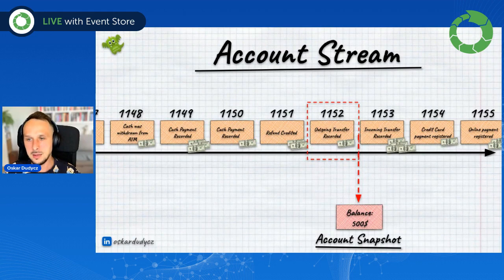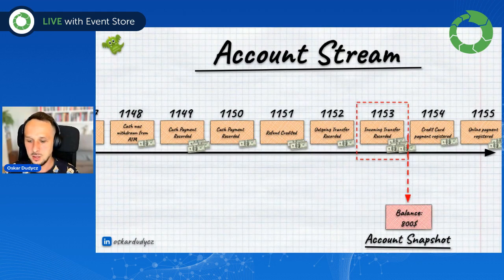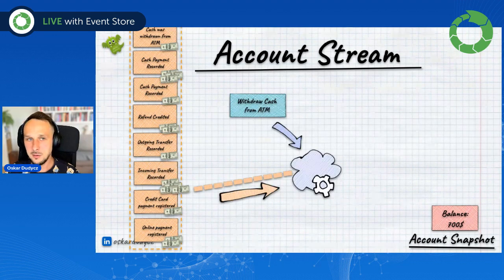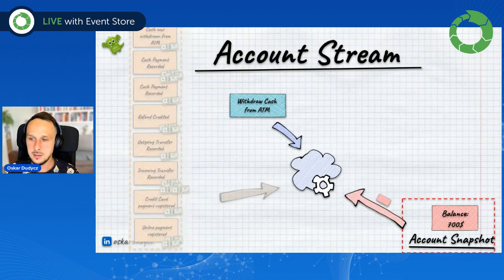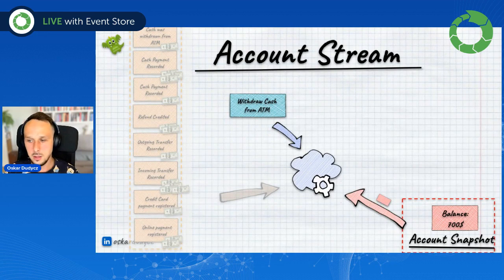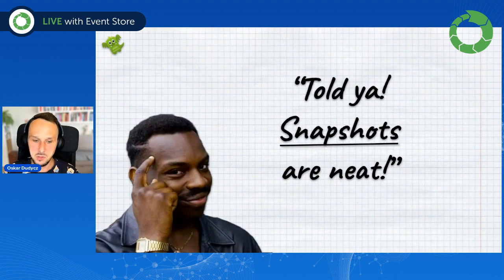We can do the snapshot and continue to do it after each event. And if we do it like that, then instead of reading this whole stream of events, we can just read the snapshot value. So instead of reading those 22,000 events, we can read only a single record, which sounds like a great optimization.